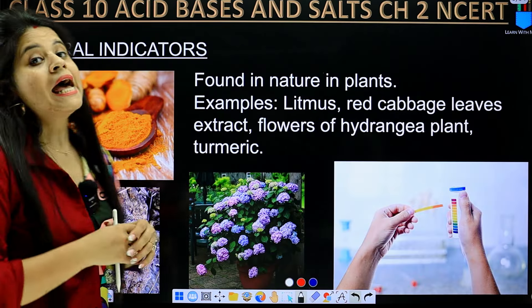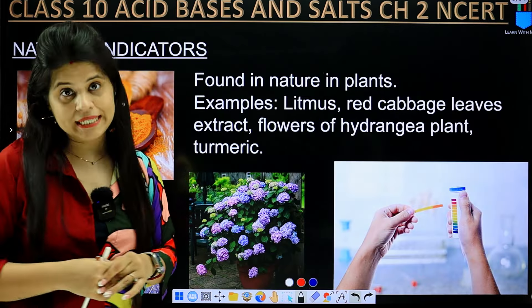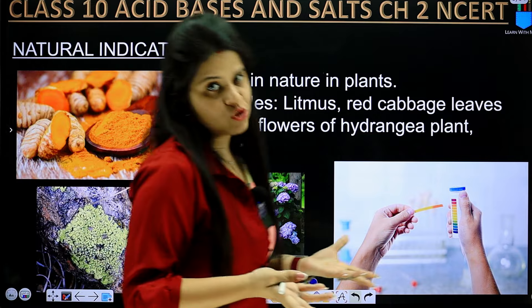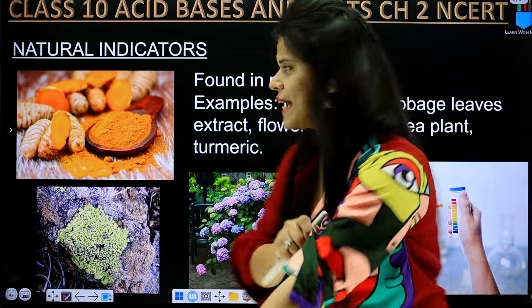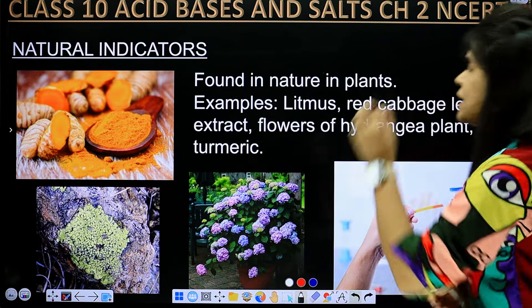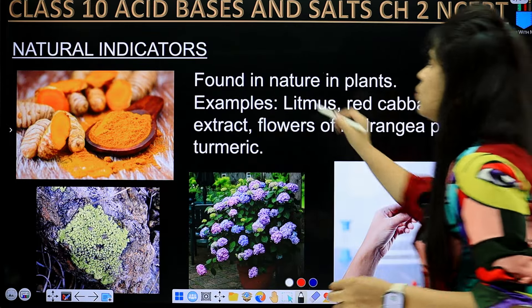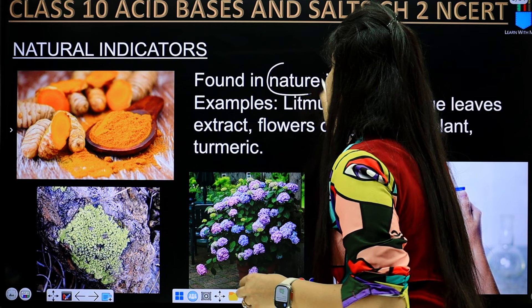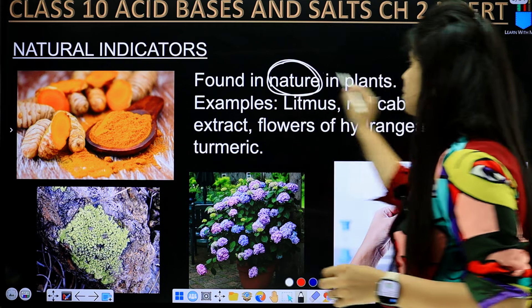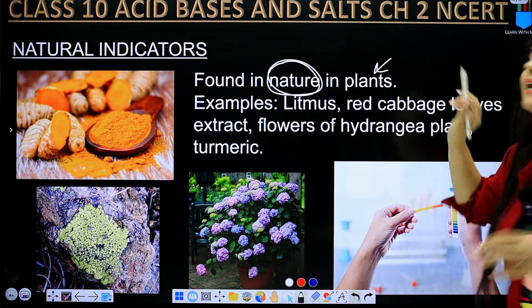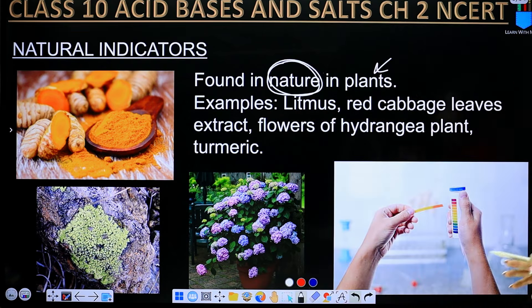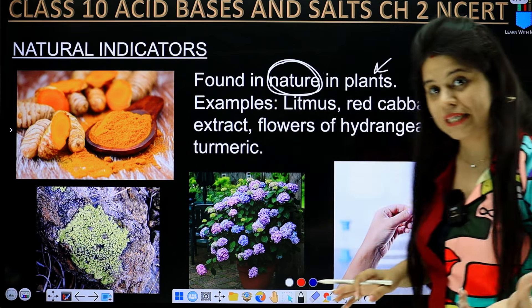Let's talk about natural indicators, which we get naturally. They are found in nature, in plants — we get them from plants, from nature. So they are called natural indicators.